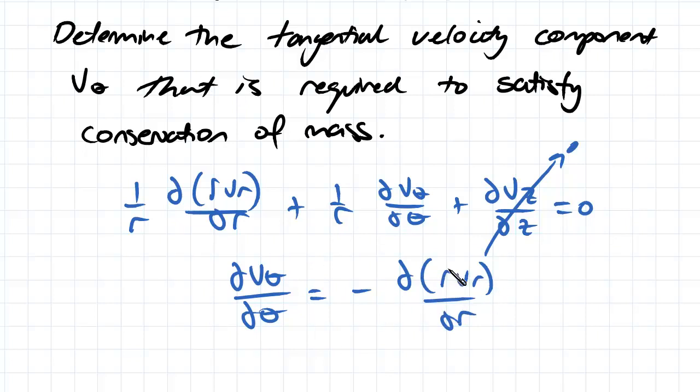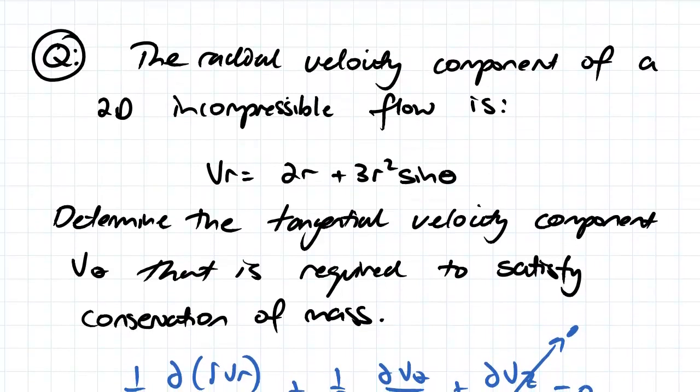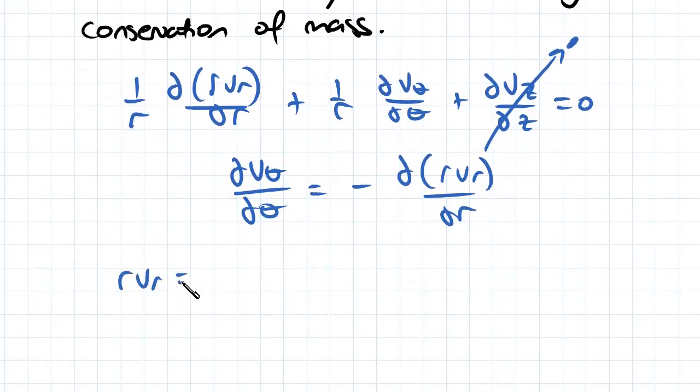So we've got an equation for vr, which is our radial velocity, and we just want to firstly work out what r vr is. So just going to multiply every single term from above by r, which is going to give us two r squared.